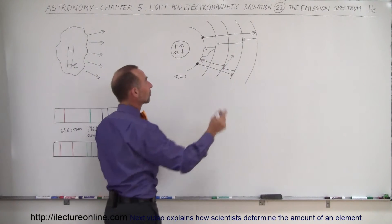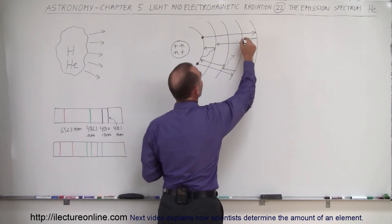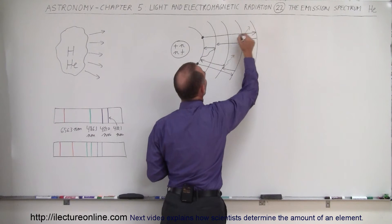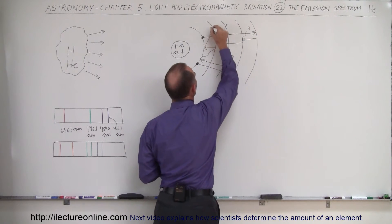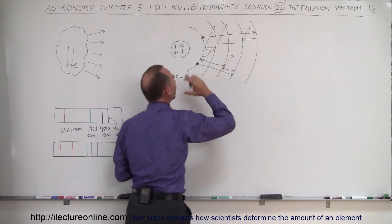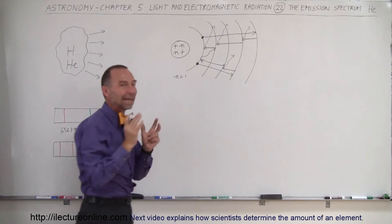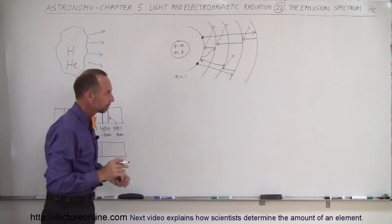So each time an electron makes a jump, it gives off a photon of that exact energy difference.